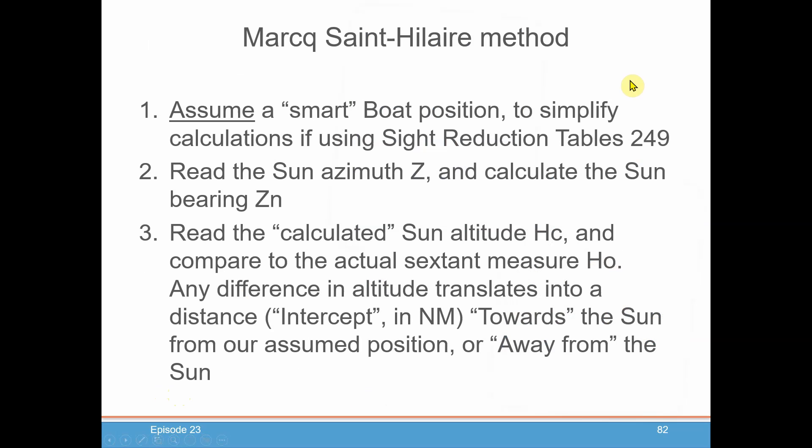So what is the Marcq Saint-Hilaire method of celestial navigation? You start off by assuming a smart boat position, and this is mainly used to simplify the calculations if you're going to be using sight reduction tables 249 or 229, which is another set of sight reduction tables. There's another way to do Marcq Saint-Hilaire method where you can assume your DR position instead of a smart boat position, but that gets us off track from how we're doing this particular course.